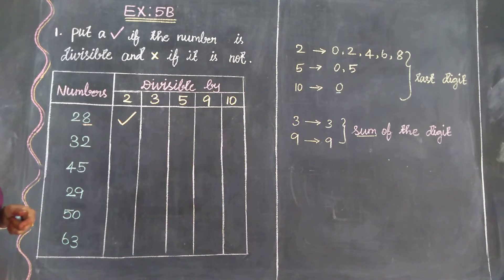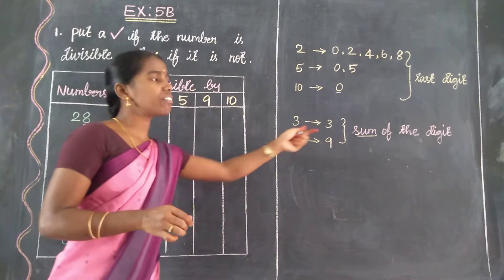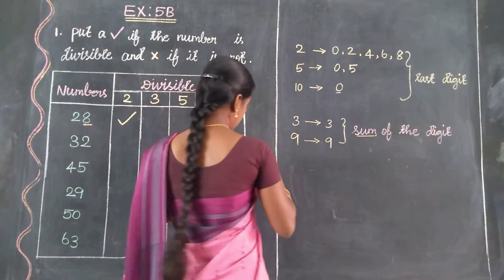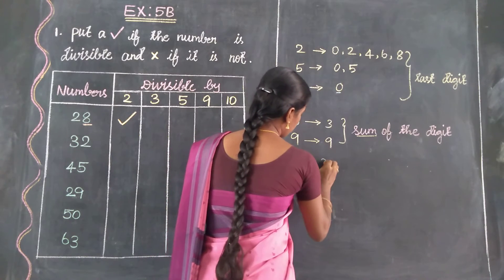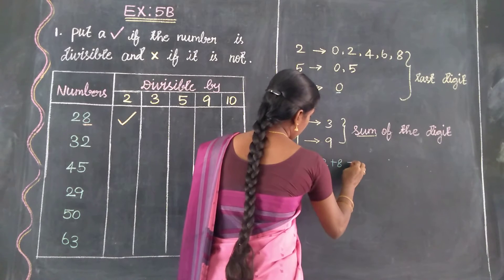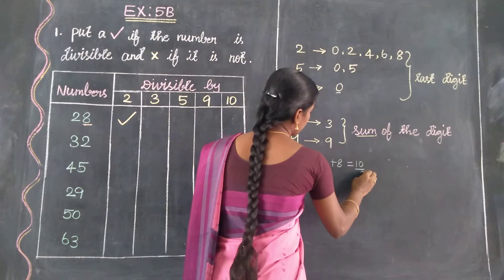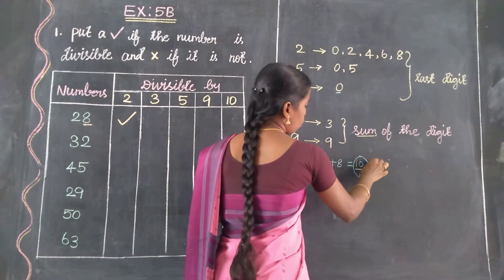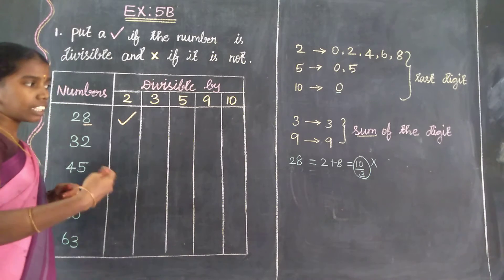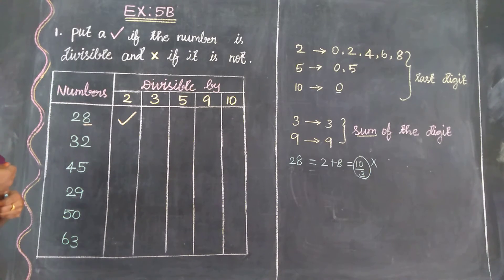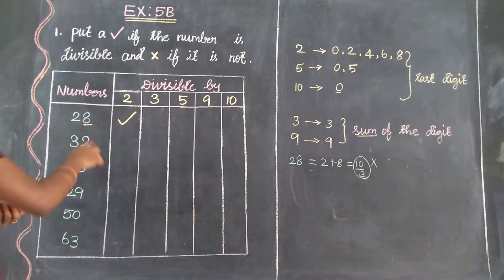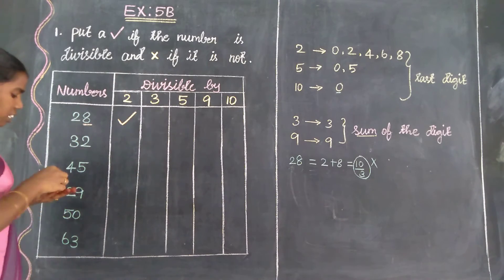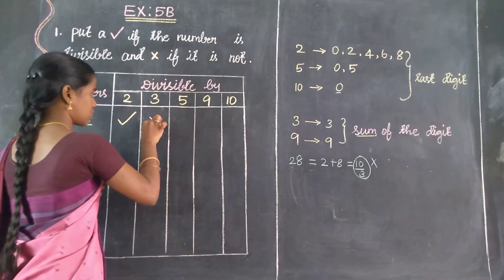Next, find out divisibility by 3. The rule for 3 is: sum of the digits. For the number 28, the first digit is 2 and the second digit is 8, which equals 10. Is 10 divisible by 3? No — 3 times 3 is 9 only, so 10 is not divisible by 3. Therefore, 28 is not divisible by 3.